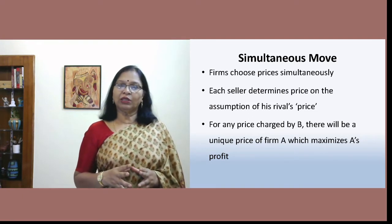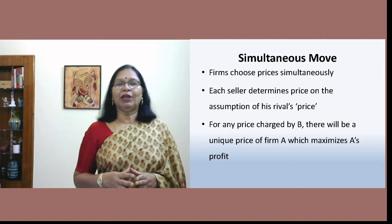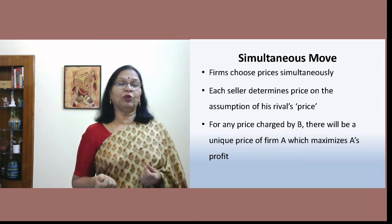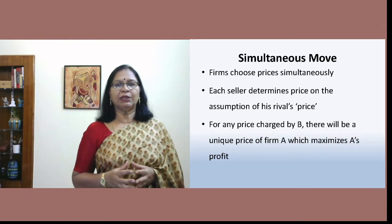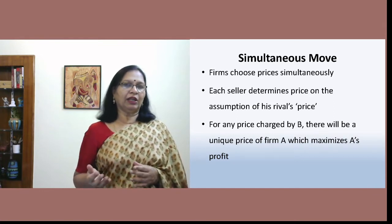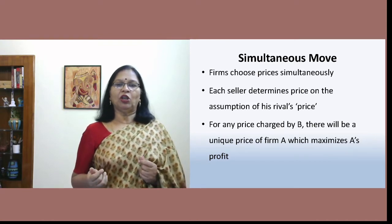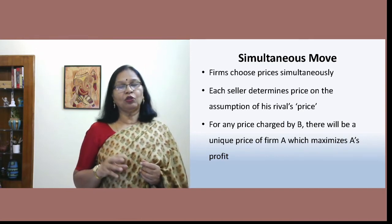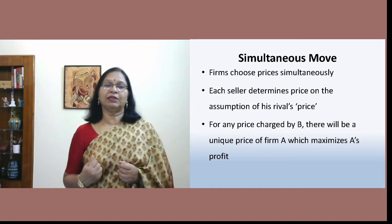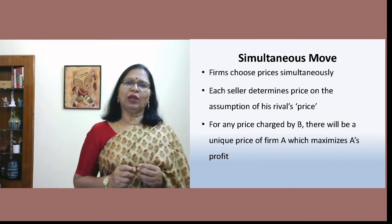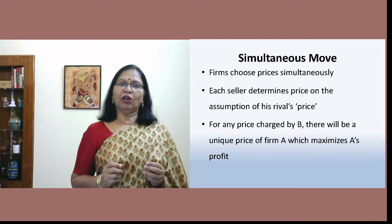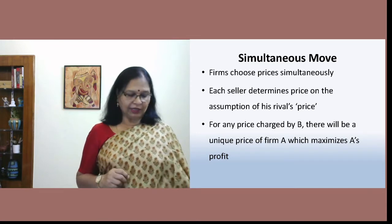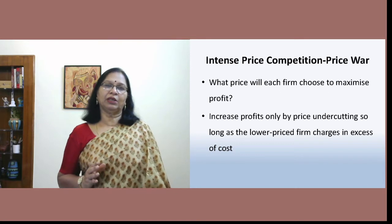Both firms are independent and do not negotiate — this is not collusive oligopoly. Both make simultaneous moves not based on negotiation with the other firm. Each seller determines his price on the assumption that the rival will not change its price. For every price charged by firm B, there will be a unique price charged by firm A which maximizes A's profit. Firm A's pricing will bring about a change in firm B's pricing as well.